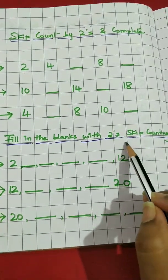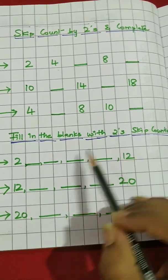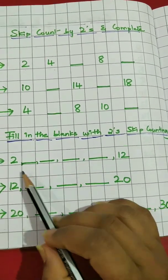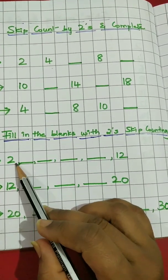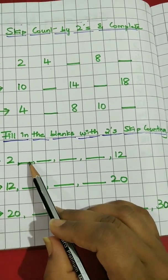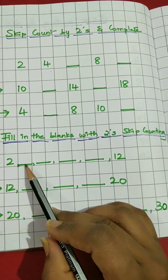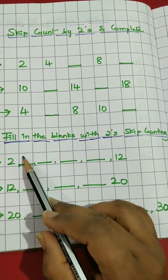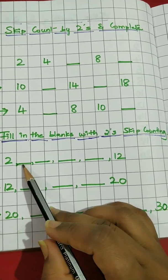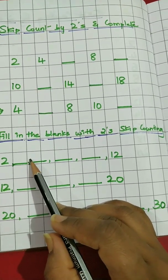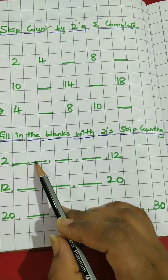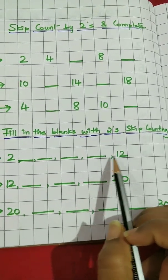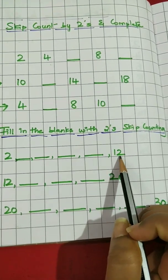Fill in the blanks with two skip counting. Fill in the blanks children. Two — what number will we skip and write here? We are going to skip three and write four. Skip five and write six, eight, ten and twelve.